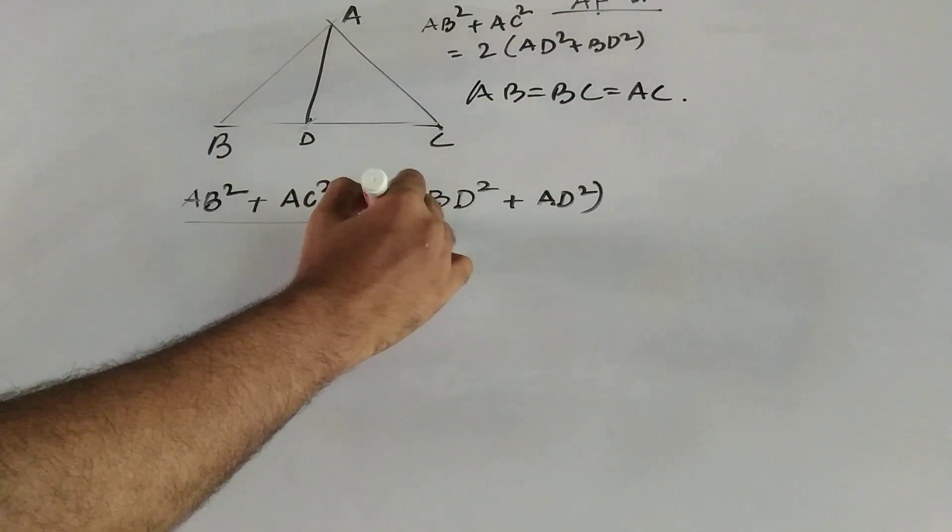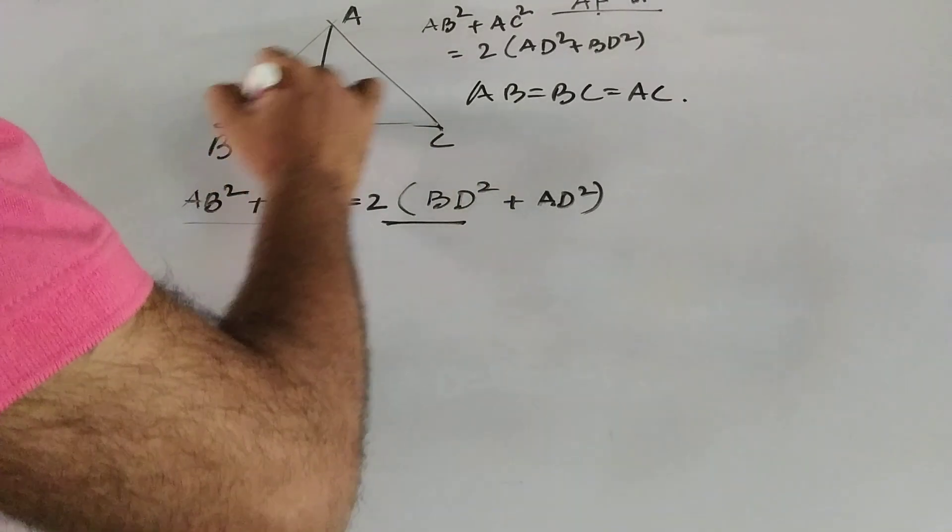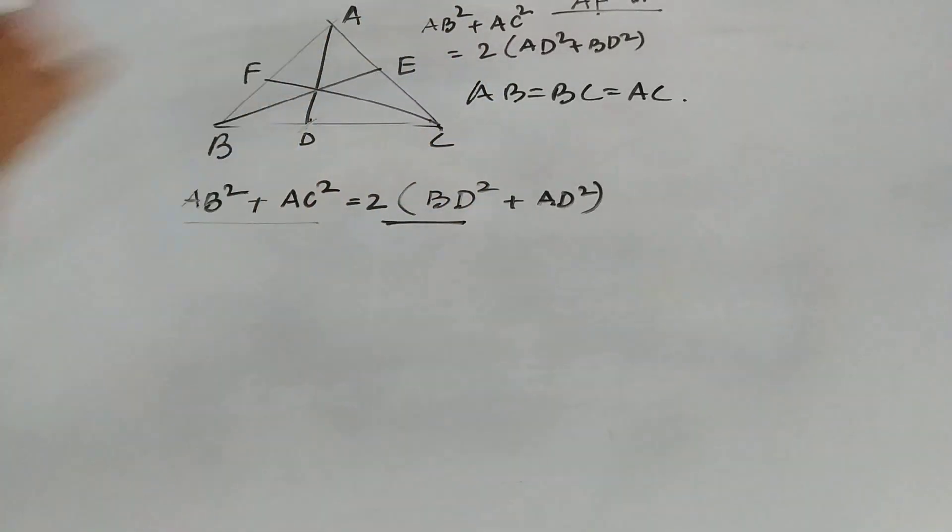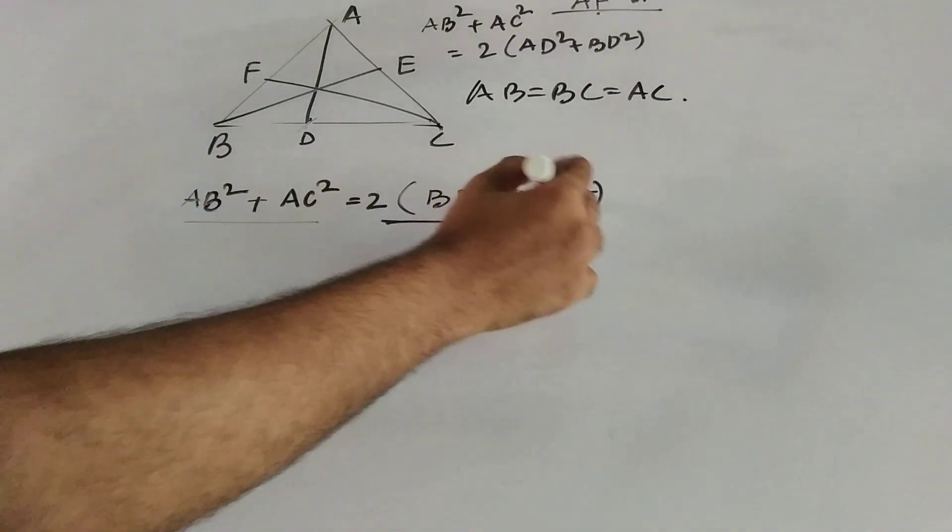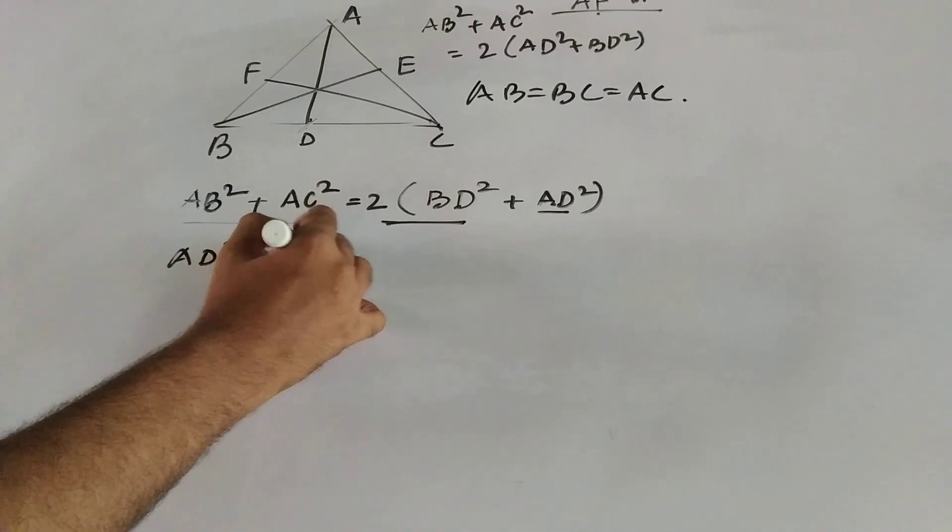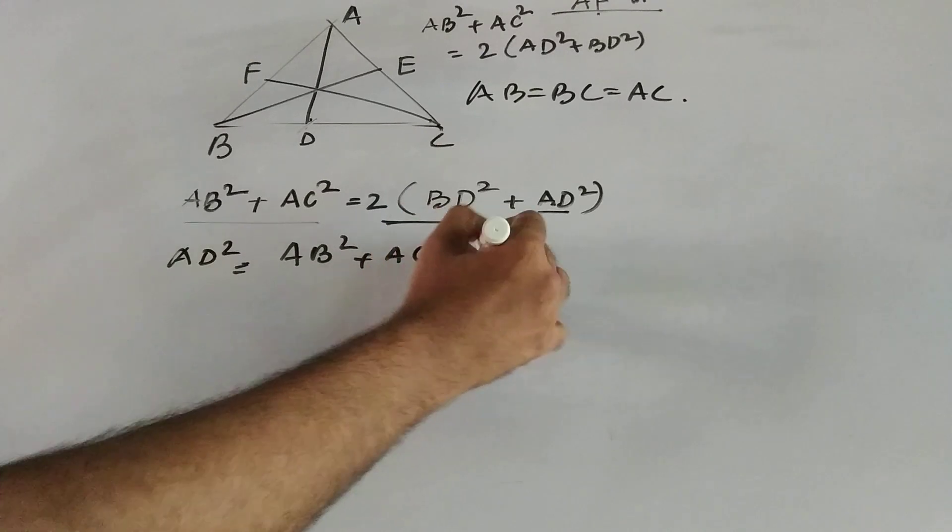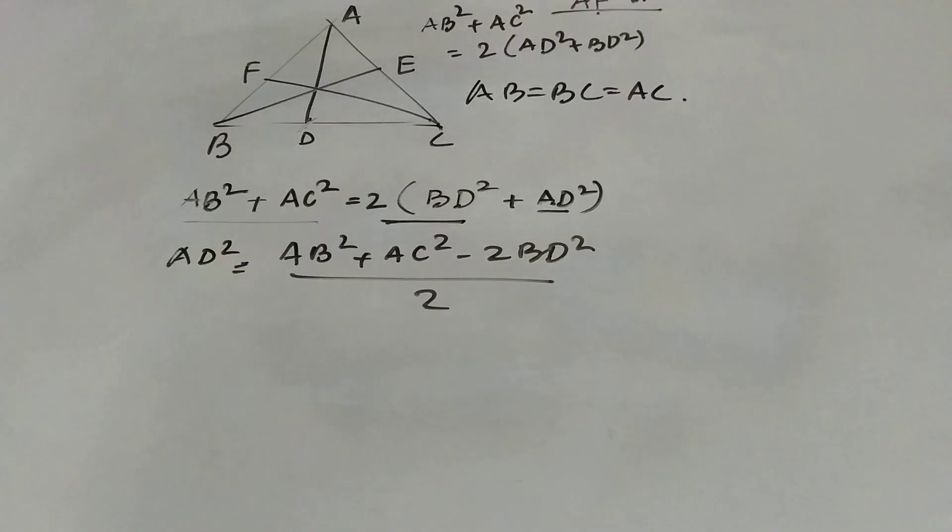From this formula, if we have to derive the median values, length of the medians, let BE and CF be other two medians. Then for the first one, AD square, what is AD square from this? AD square will be AB square plus AC square minus 2 BD square whole divided by 2. This is a simple derivation.